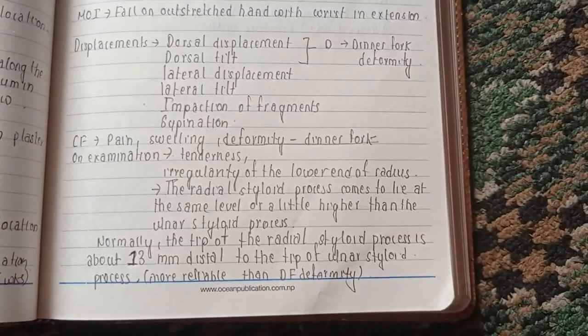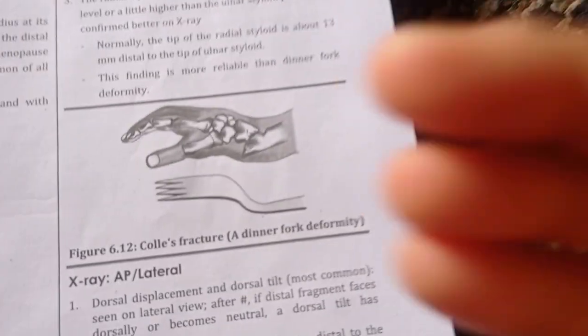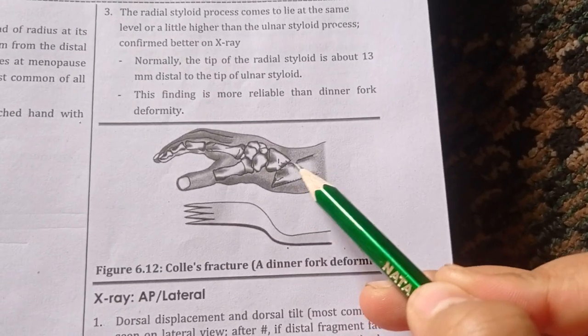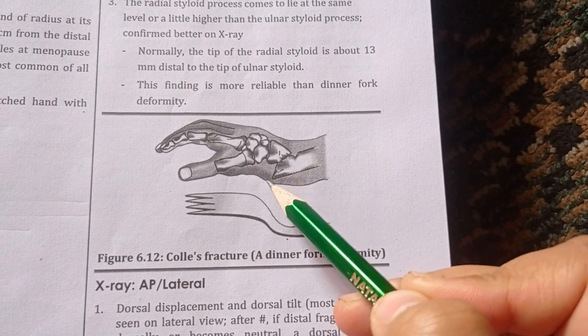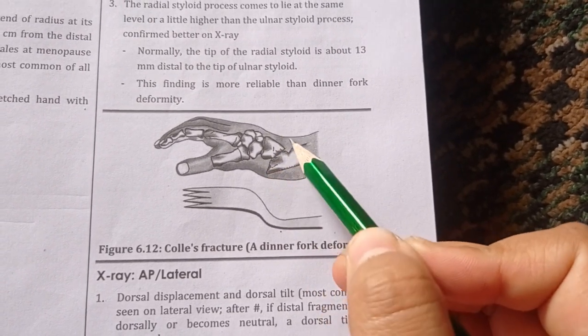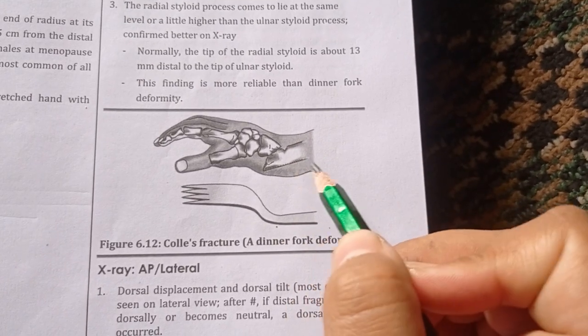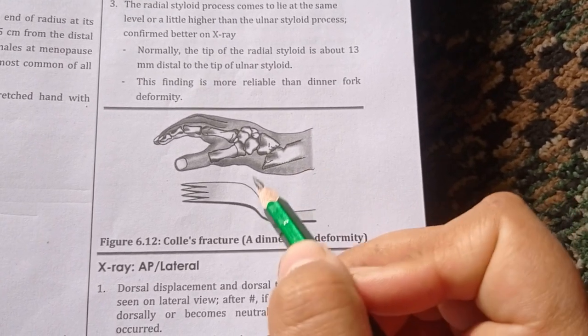We can see in the picture here there is fracture of the distal part of the radius at the corticocancellous junction which causes the dinner fork deformity. We can see this shape here - it looks like a dinner fork.